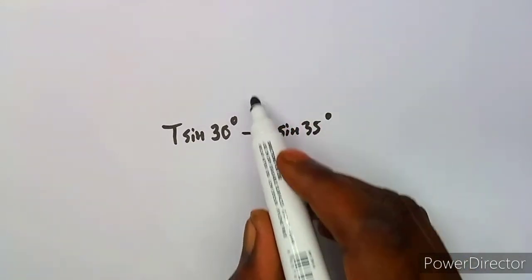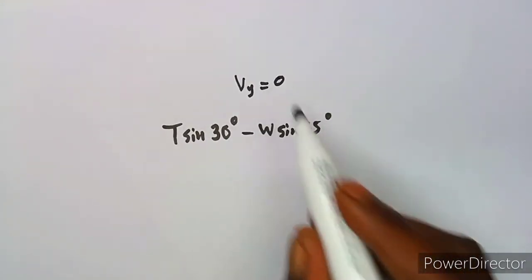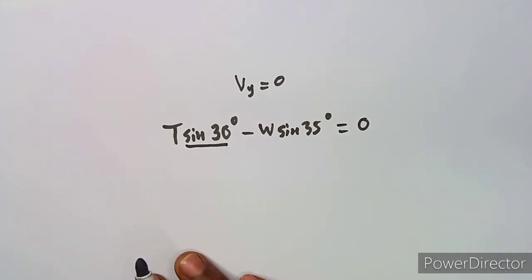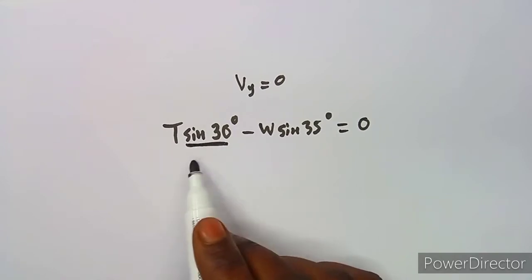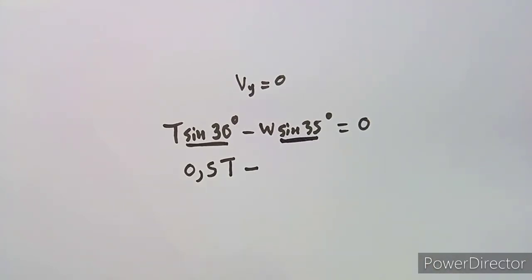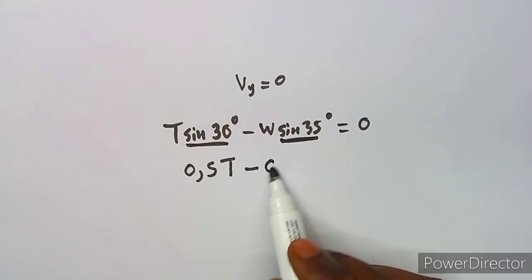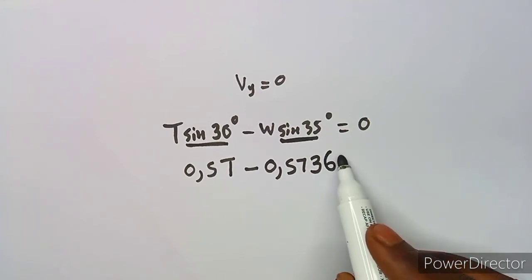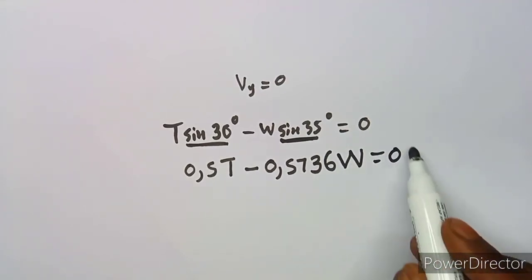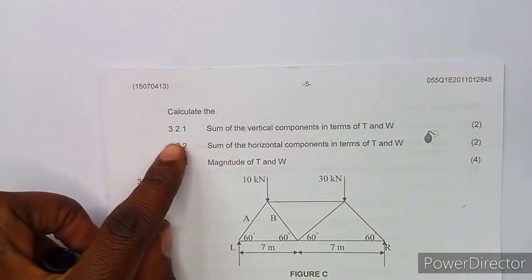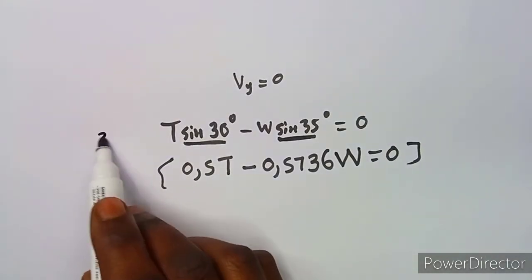Since the forces are in equilibrium, the sum of the vertical components equals zero. So: T sine 30° − W sine 35° = 0. Sine 30° from your calculator is 0.5, and sine 35° is approximately 0.5736. So we have: 0.5T − 0.5736W = 0. This is equation 3.21.